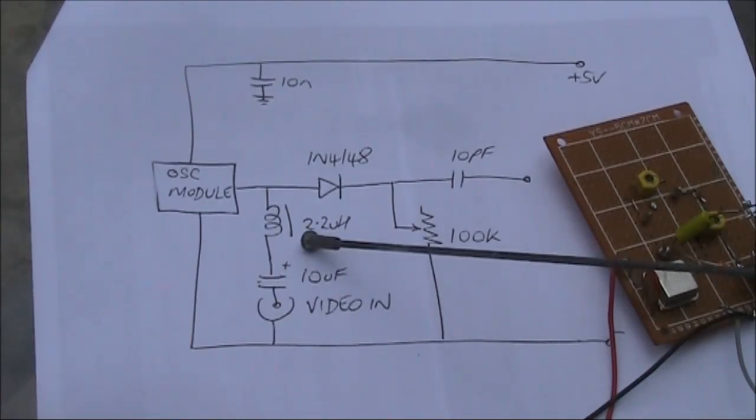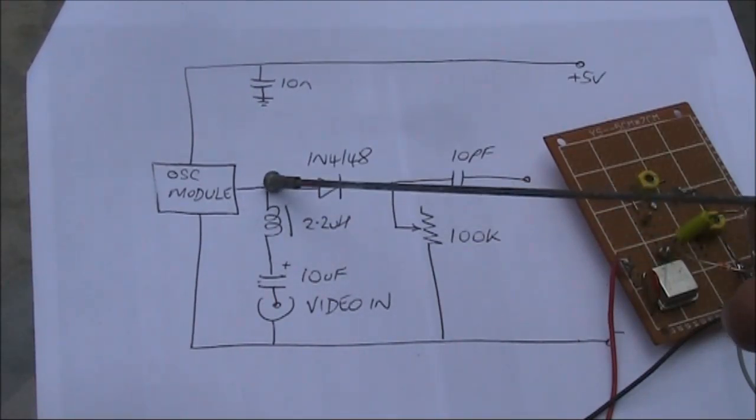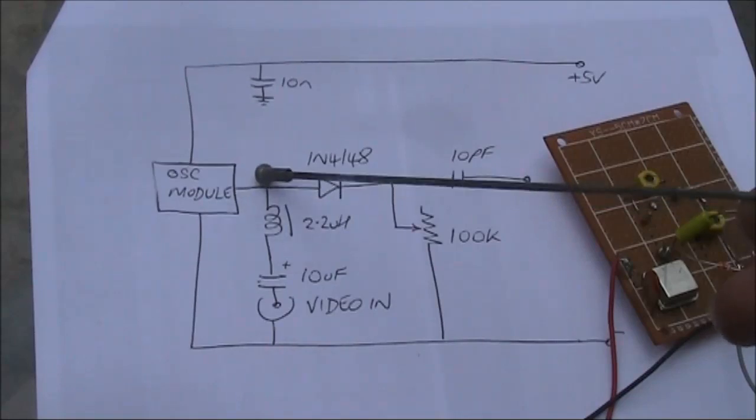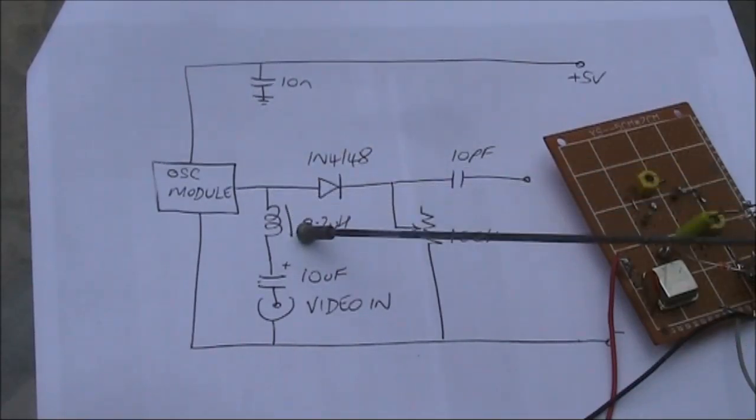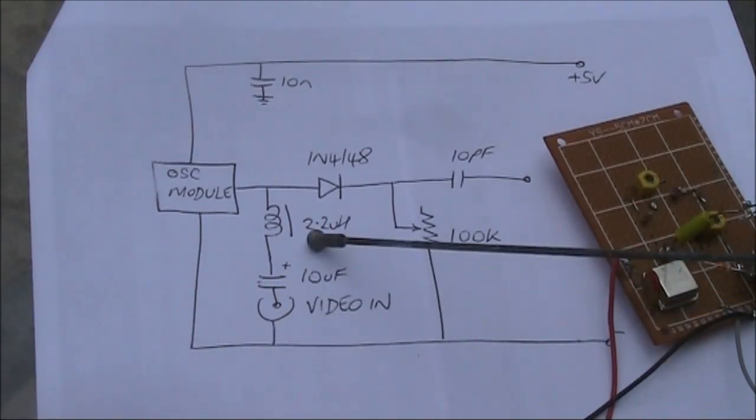That RF choke provides a bit of isolation between the RF here, which is your 16 MHz from the module and the numerous harmonics, and the lower frequency video input signal. You can remove the RF choke and substitute a resistor. I tried 100 to 220 ohm, but the video quality isn't as good.